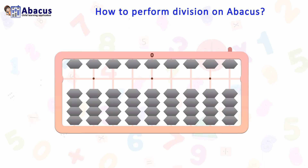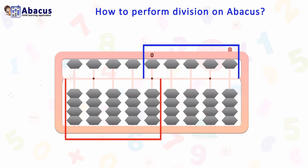We will use the multiplication or times table to look up results on the right and get the result on the left instead. From the unit rods, the right rods start with the dividend and will be used to keep track of the remainders.